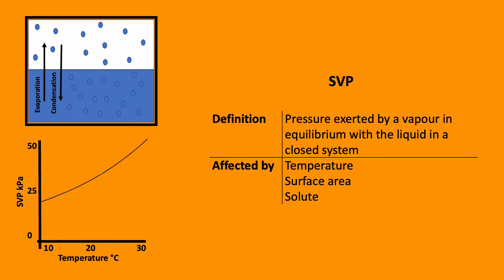As the temperature increases, the SVP increases in a non-linear fashion. In the top left corner, there's a container containing liquid. In any liquid, some molecules have sufficient energy to leave the liquid and become a vapor — i.e., evaporation. It occurs only at the surface of a liquid and requires heat energy: latent heat of vaporization.